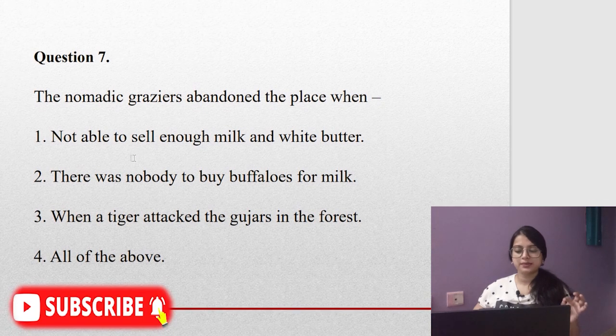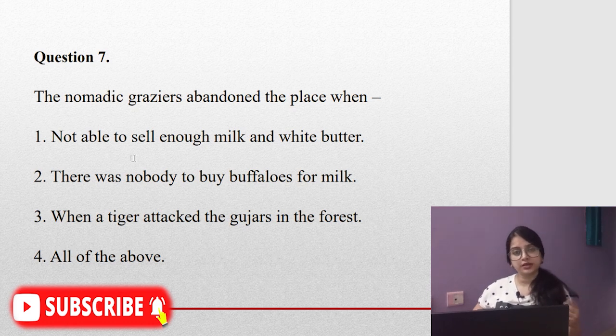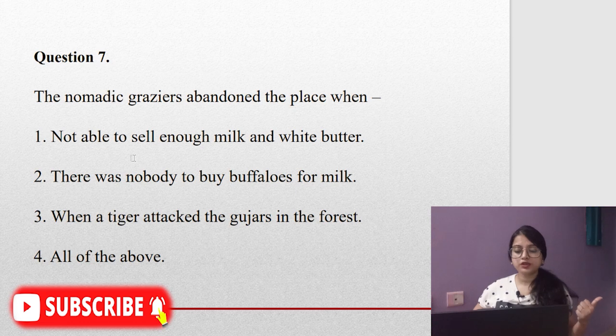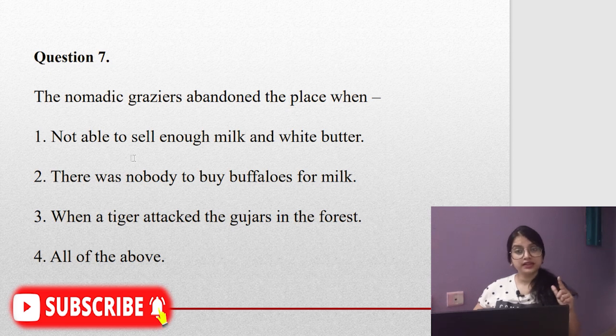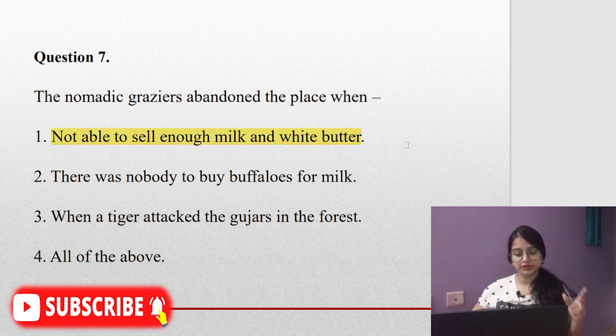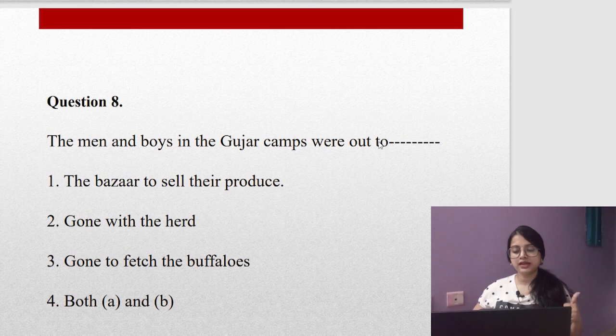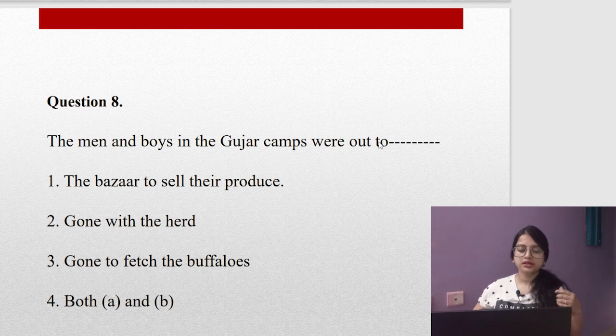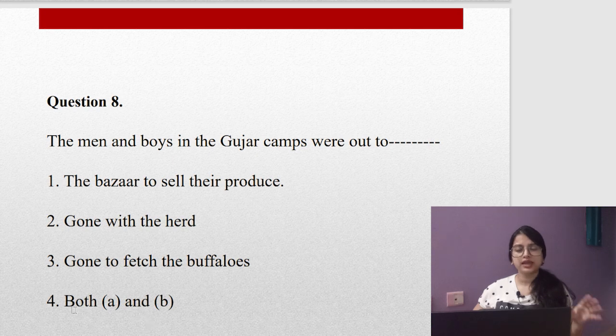Question number seven: The nomadic graziers abandoned the place when? When did they abandon or leave the place? Is it because they were not able to sell enough milk in Whitewater? Yes, this is correct. There was nobody to buy buffaloes for milk? No, this is wrong. When a cattle-killing tiger created a nuisance or was making a nuisance of himself? This was there. So only number one is correct. Question eight: The men and boys in the Gujar camps were out selling their produce in the bazaar and gone with the herd. So option number four is correct when both A and B options are correct.